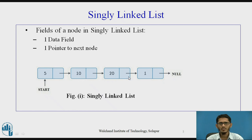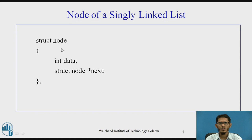Here we have a diagram of a singly linked list. The first node has data 5, then the next nodes have data 10, 20, 1, and so on. Every node has a next pointer pointing to the next node, and the next pointer of the last node points to null, indicating the end of the list. To implement this in C, we use a struct node with two fields: an integer data field and a struct node star next pointer to the next node.